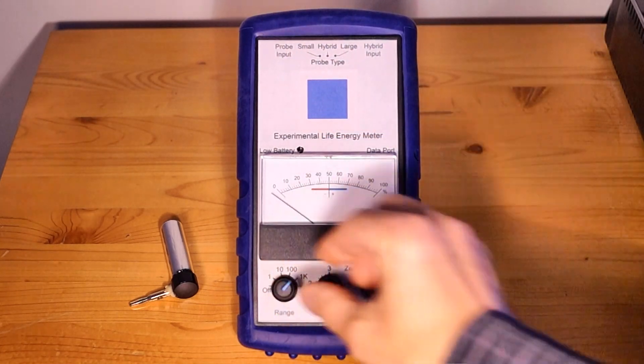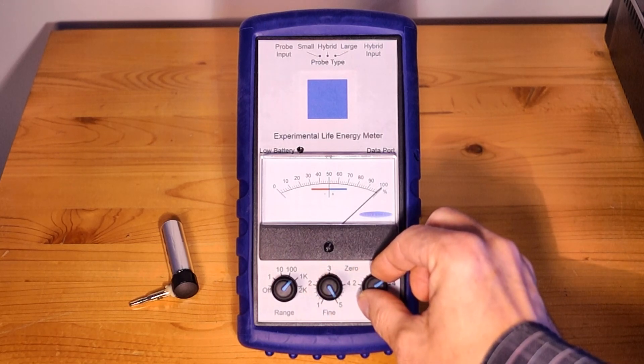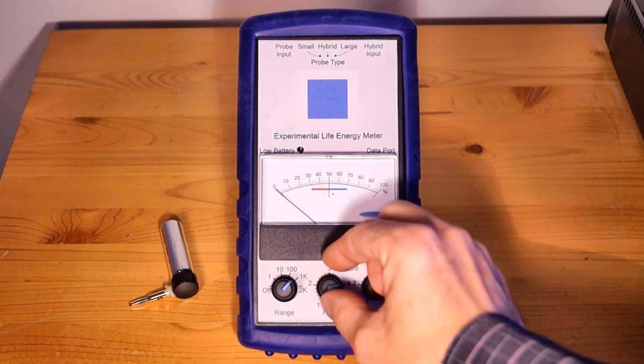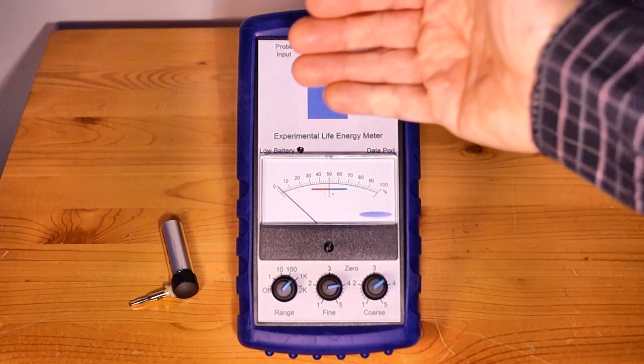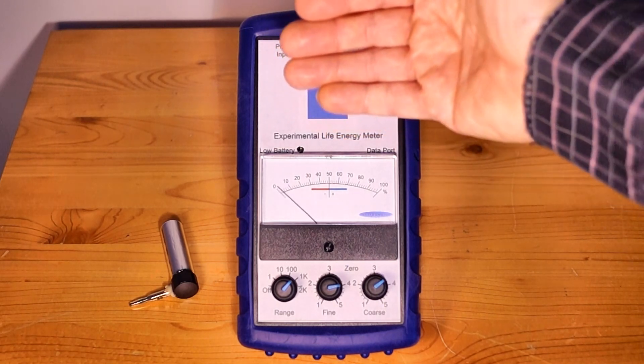If we now increase to the times one thousand, now we only need to adjust the fine just a little bit to get it to the right place. Once the fine is adjusted, then the body field is detected at an even further distance.